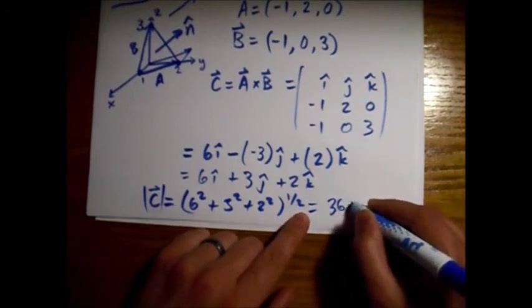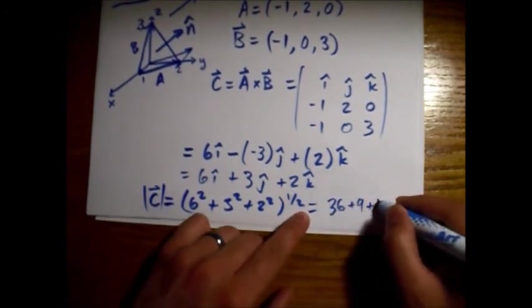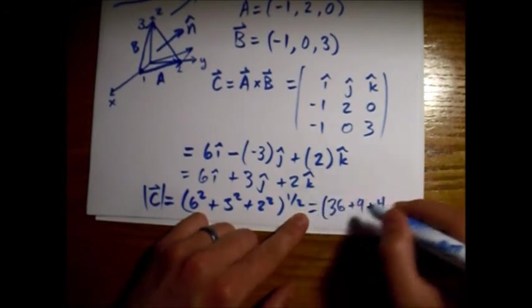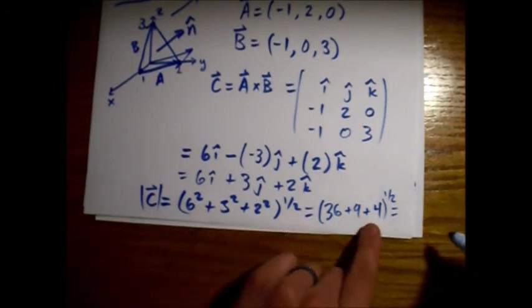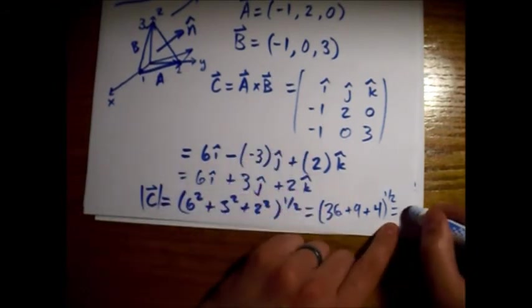So 36 plus 9 plus 4, that's 49. 49, square root of 49 is 7.